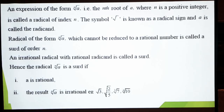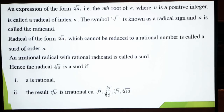An irrational radical with rational radicand is called a surd — یہ اس کی جو سب سے best definition ہے۔ ایک ایسا irrational radical جس کا radicand rational ہو وہ surd کہلاتا ہے۔ Irrational radical سے کیا مراد ہے کہ آپ کے پاس یہ radical sign ہے اس میں آپ کے پاس کوئی ایک number ہے لیکن یہ پورا expression irrational number ہوگا، اور اس میں موجود یہ جو a ہے یہ آپ کا rational ہوگا — جیسے 2، 3، 4، 5، 6، 7۔